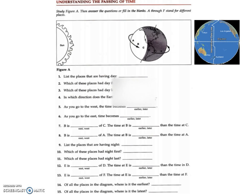In this diagram, places A, B, C, D, E, and F are shown. The places having day are A, B, and C. The place that had daylight first would be C, and the place that had day last would be A, more in the west. Therefore, the Earth is rotating from east to west.